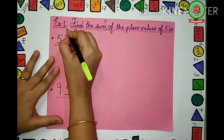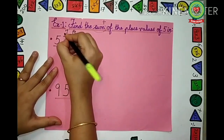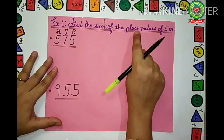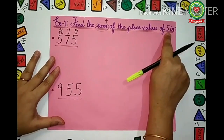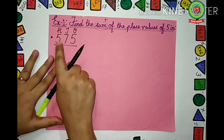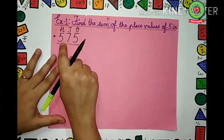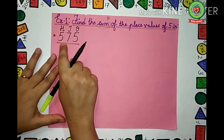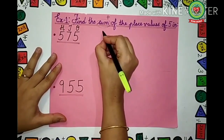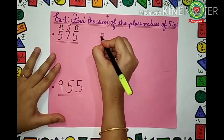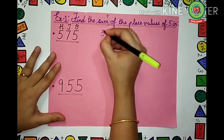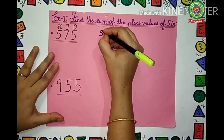We know that the place value table always starts from the right-hand side. So: 1's, 10's, 100's. They have told the place values of 5. 5 is under 100, so we will take the bigger number first. 5 is under 100, so we will write down 500. 100 means two zeros, so 5 with two zeros is 500.